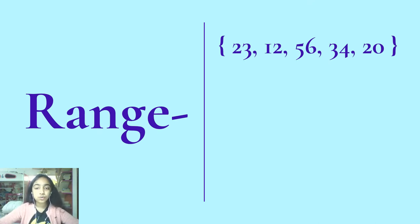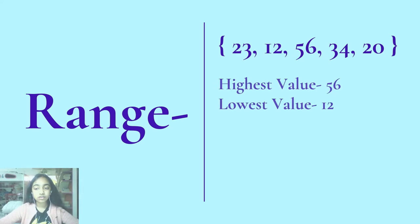For example, we have a data set right here: 23, 12, 56, 34, and 20. Now we take the highest value and the lowest value. The highest value is 56 and the lowest value is 12.